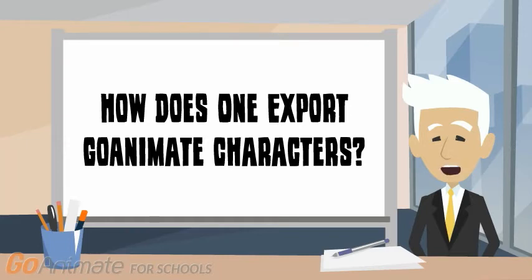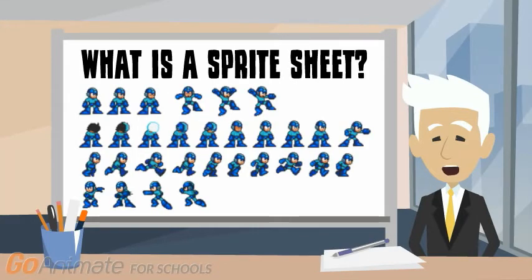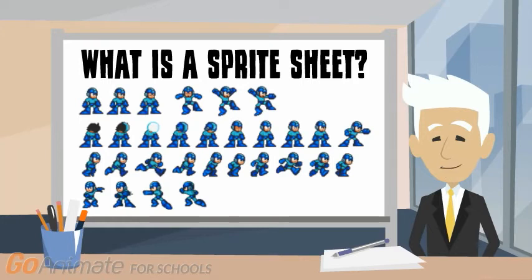By 'exporting' a GoAnimate character, I am referring to creating a sprite sheet of that character. For those of you who don't know what a sprite sheet is, I will explain. A sprite sheet is a way that games and animations create images on the screen — basically, the computer picks which version of the character it needs for each situation. Some sprite sheets are fairly complicated and break up the character's various body parts, but for this tutorial we will make a fairly simple sprite sheet. More advanced users will be able to use the skills I teach you to create much better, more detailed sprite sheets. I will focus mostly on showing you how to grab these images for your own characters.